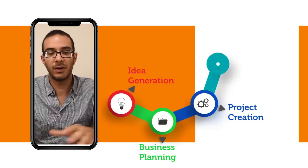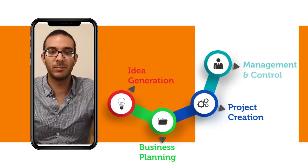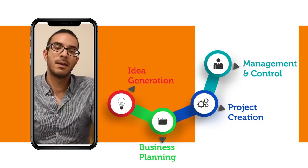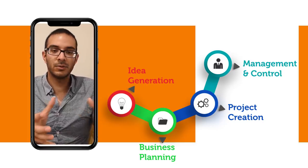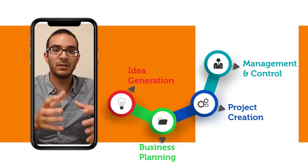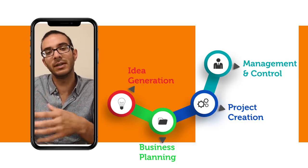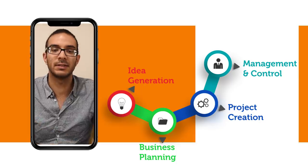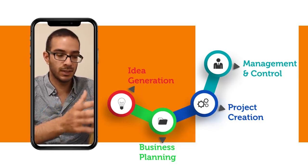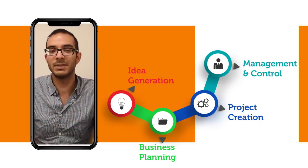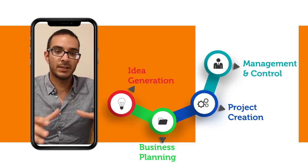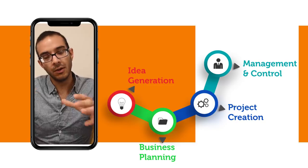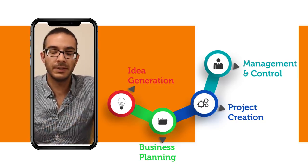Then you get to the fourth part of the entrepreneurial process, which is management and control. At this point you already have the operation running, so you focus on increasing revenue and keeping the quality of your products and services. Now, going from being an entrepreneur, you start to become a businessman. Once you have the management and the income, you have to look for control and growth of the business.